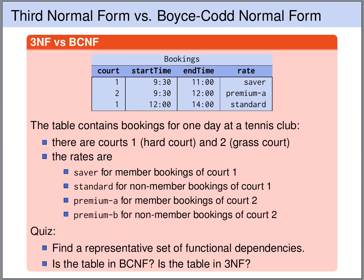Let's look at one more example. Here we have the bookings for a small tennis club with only two courts. Court 1 is a hard court and Court 2 is a grass court. This bookings table contains only the bookings for a single day. We have the court number, the start time, the end time, and the rate at which the booking has been made. We have different rates: the saver rate for member bookings of Court 1, the standard rate for non-member bookings of Court 1, premium A for member bookings of Court 2, and premium B for non-member bookings of Court 2. Our task is to find a representative set of functional dependencies and decide whether this table is in Boyce-Codd normal form or in third normal form.